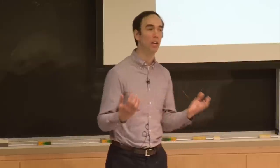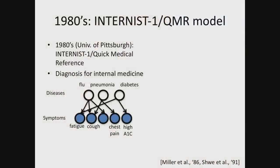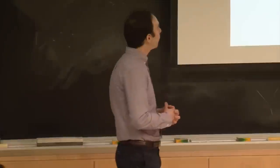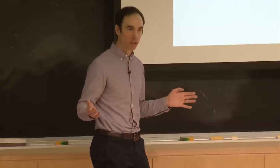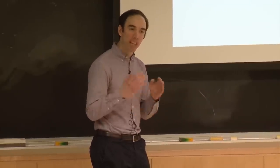A second example, equally impressive, was work from the 1980s in Pittsburgh developing what's known as Internist-1 or the Quick Medical Reference system. This was used not for infectious diseases but for primary care. The question was: how do you do diagnosis at a larger scale where patients might come in with one of hundreds of different diseases and report thousands of different symptoms? At a high level, they modeled this as something like a Bayesian network — it wasn't strictly one at the time, it was more heuristic, and was later developed to be so.